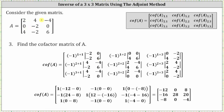Cofactor one comma two is equal to negative one raised to the power of one plus two times the corresponding minor. Eliminating row one and column two gives a two by two determinant where row one is zero, zero, and row two is four, six. Cofactor one comma three is equal to negative one raised to the power of one plus three times the corresponding minor. Eliminating row one and column three gives a two by two determinant where row one is zero, negative two, and row two is four, negative two.